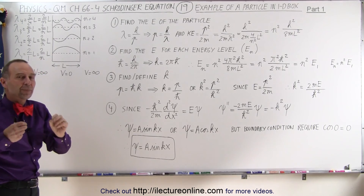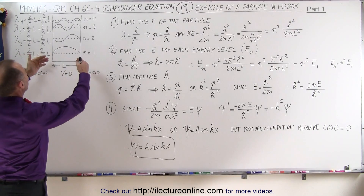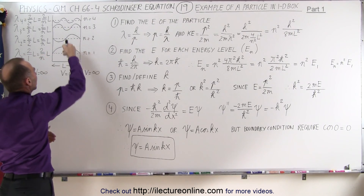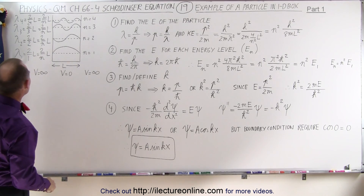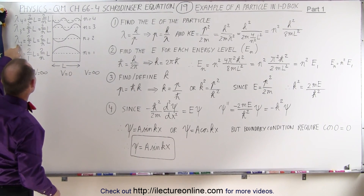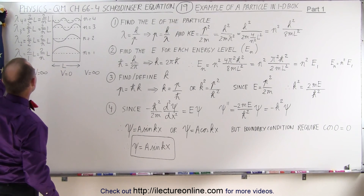If this was represented by a standing wave of a string, this is what the strings would look like. And so you can see that we can then calculate the wavelengths: lambda 1, lambda 2, lambda 3, and lambda 4.